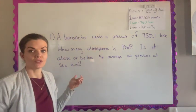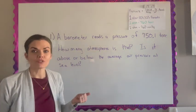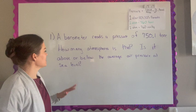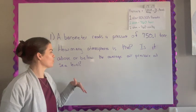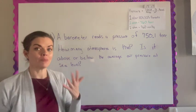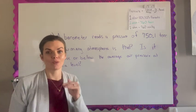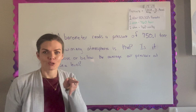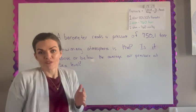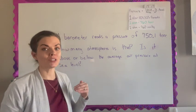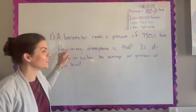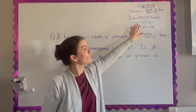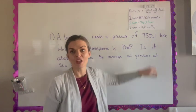Comprehension check question number one tells us that a barometer reads a pressure of 750.1 torr. How many atmospheres is that and is it above or below the average air pressure at sea level? A barometer is just a device you may have in your home, it may be electronic or sometimes you may actually have an analog one. It measures the air pressure and so basically it wants us to convert that into torr. So we're going to use the factor label method that we've been using to cancel out units to convert from torr to atmospheres.